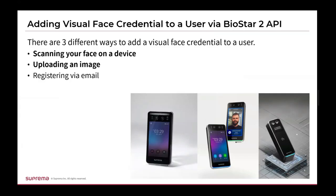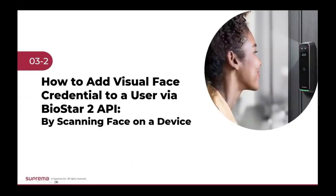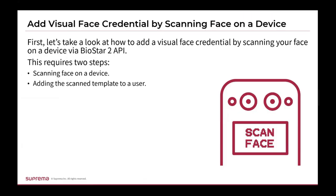There are three methods to add a visual face credential to a user. The first method involves scanning the user's face on a device. The second is to upload an image. Lastly, you can register via email. In this webinar, I'm going to go over the first two options. So I will show you how to add visual face credential by scanning your face on a device. This method requires two steps: first, scan your face on a Suprema device; second, add the scan template to a user.